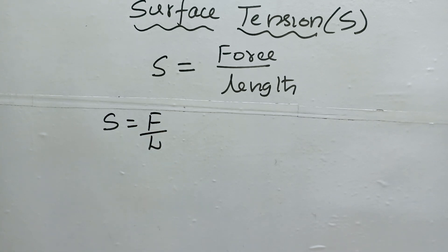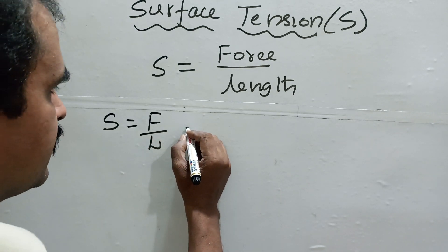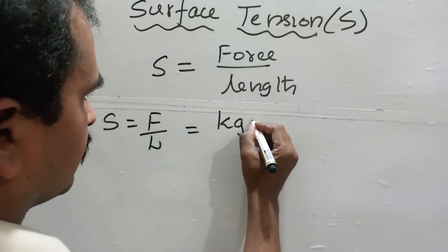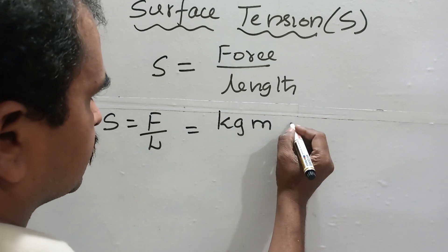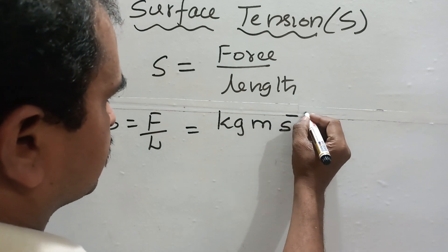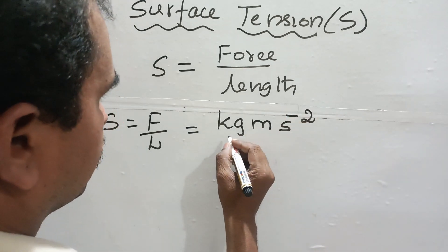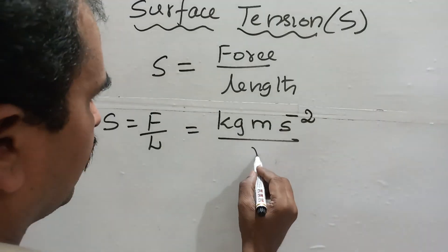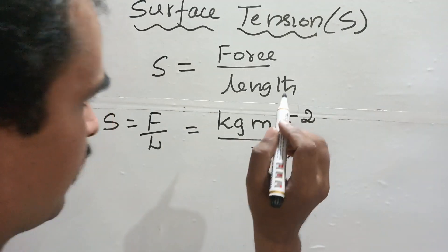You know that the SI unit of force is nothing but kg·m per second squared, divided by the SI unit of length, which is meter.